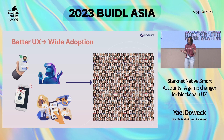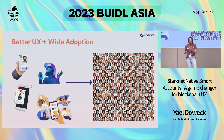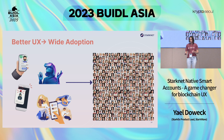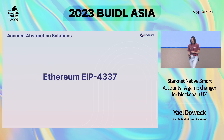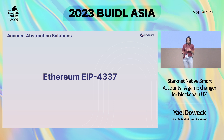We saw all these nice things we can do with account abstraction, and of course there are other great ideas. These features will bring better accessibility and approachability to blockchain in general, and then lead to wider adoption. Now that we've seen how amazing account abstraction is, I'm going to show you two implementations: one done by Ethereum called EIP-4337, and the second done on StarkNet called native smart accounts. I'll explain why we chose our approach.